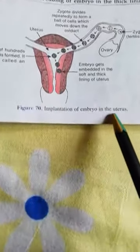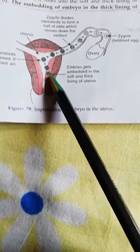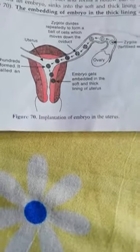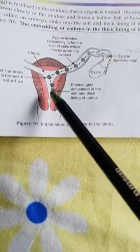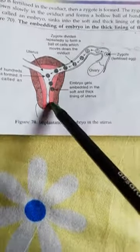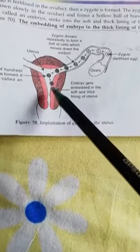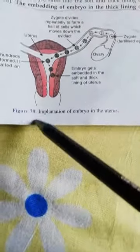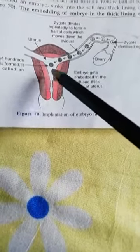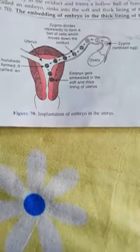The zygote divides, moves, and embeds itself — the embryo gets embedded in the thick lining of the uterus, which is called implantation. When proper fertilization takes place, implantation also occurs. If fertilization does not take place, the egg comes out; but when fertilized, it embeds in the inner lining of the uterus. Otherwise, it exits the body in the form of blood.